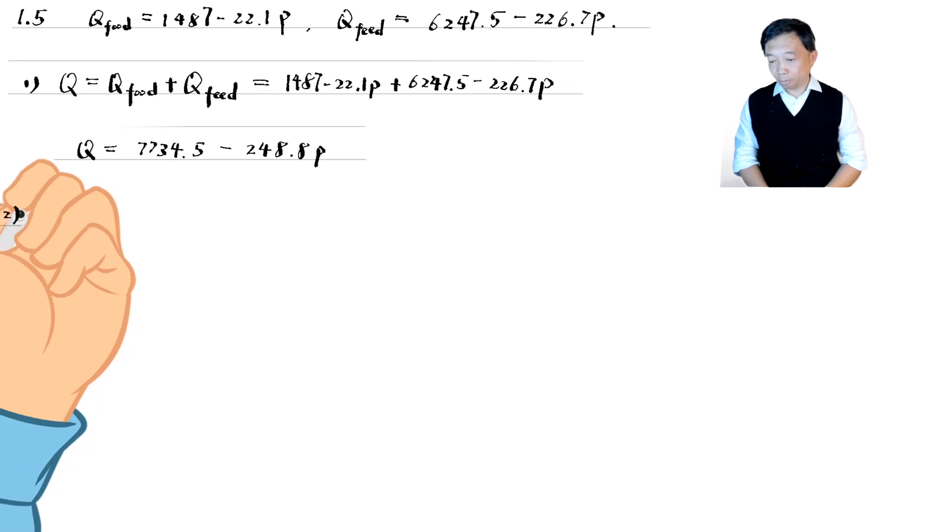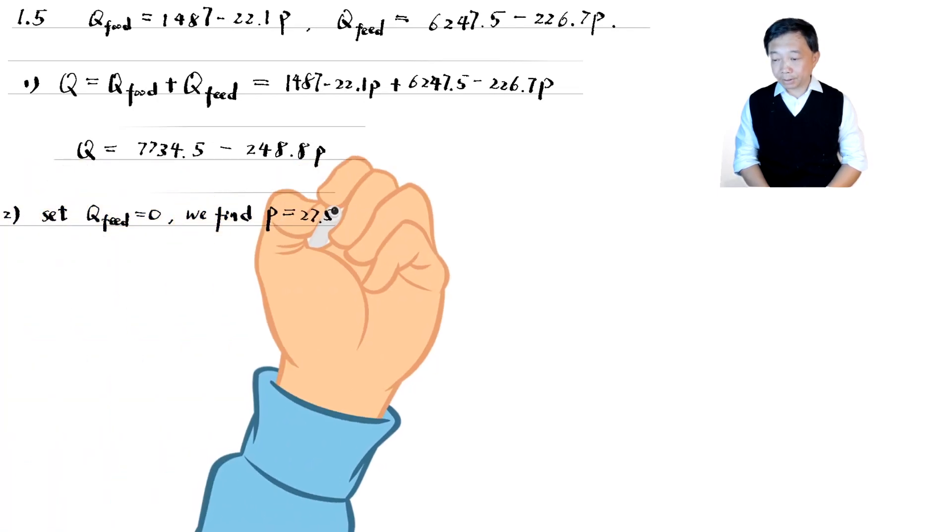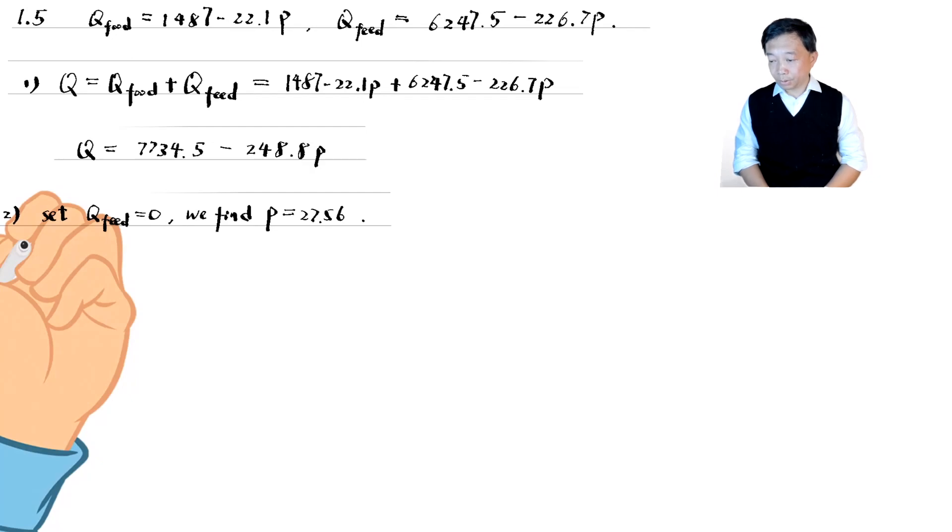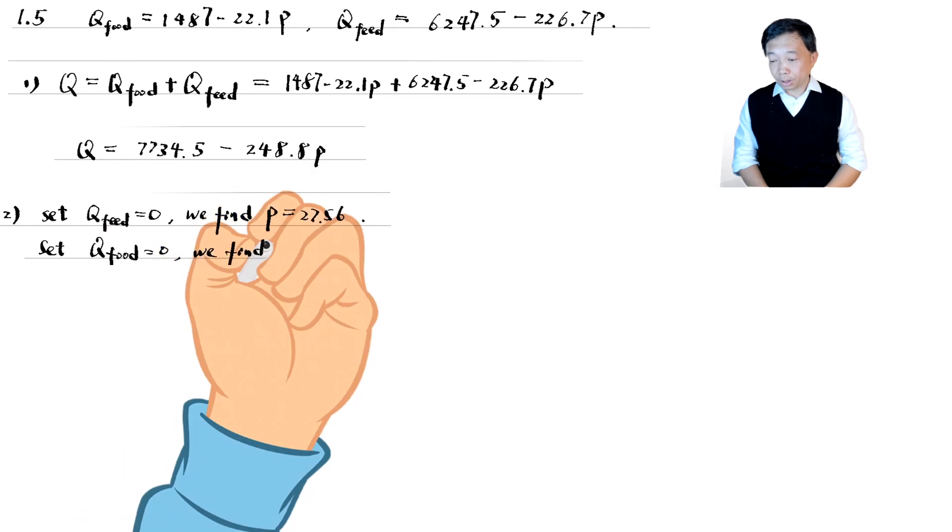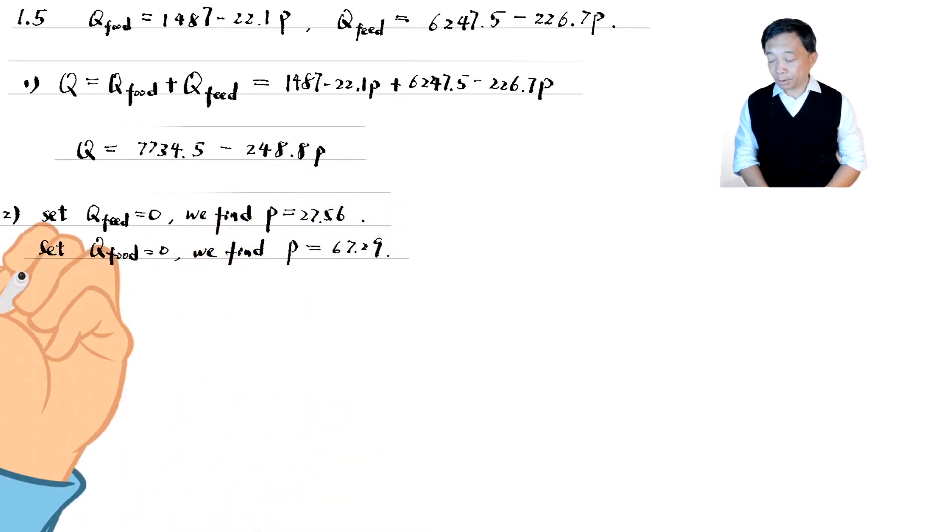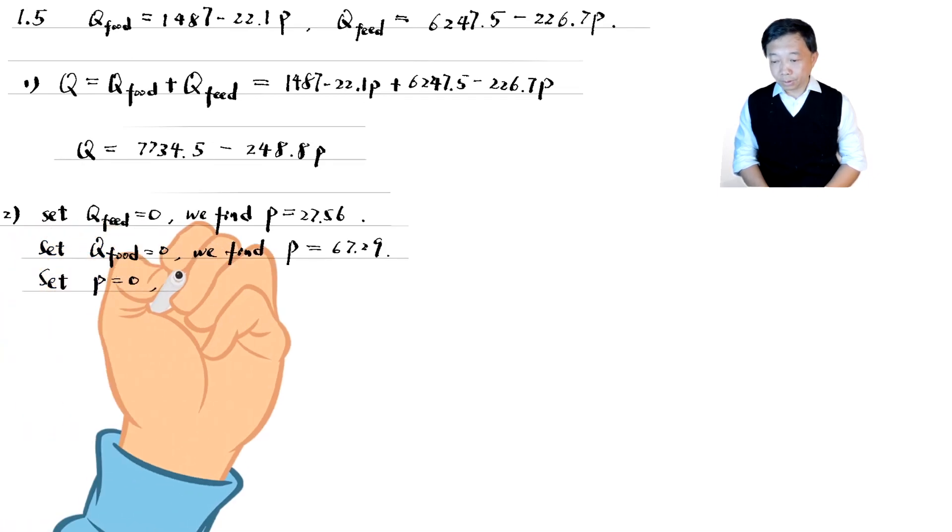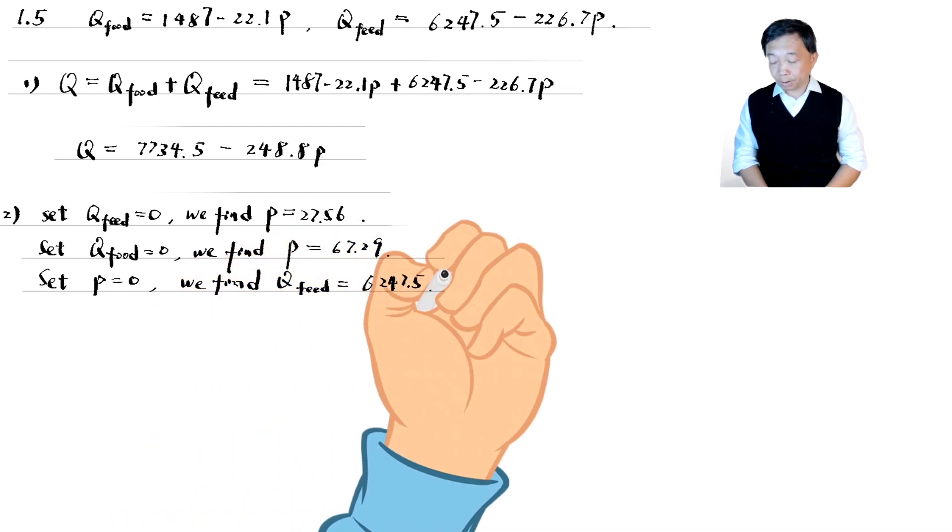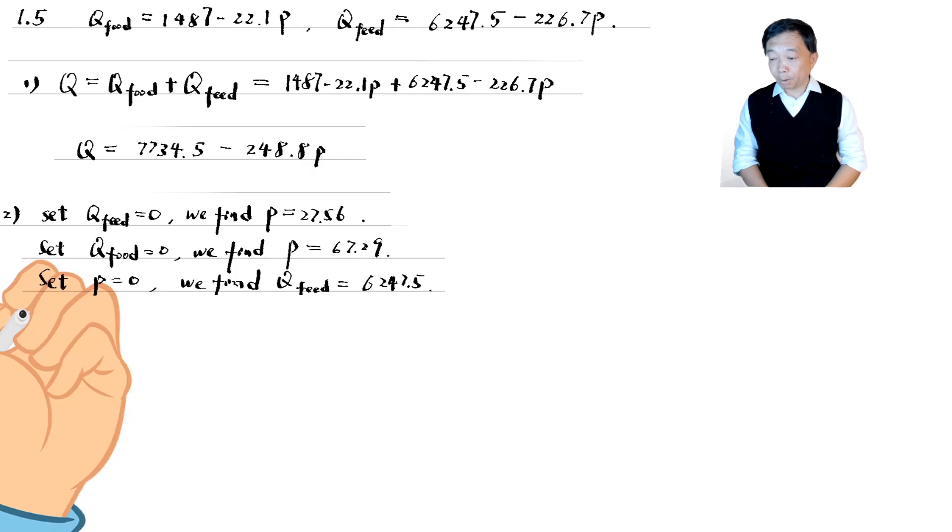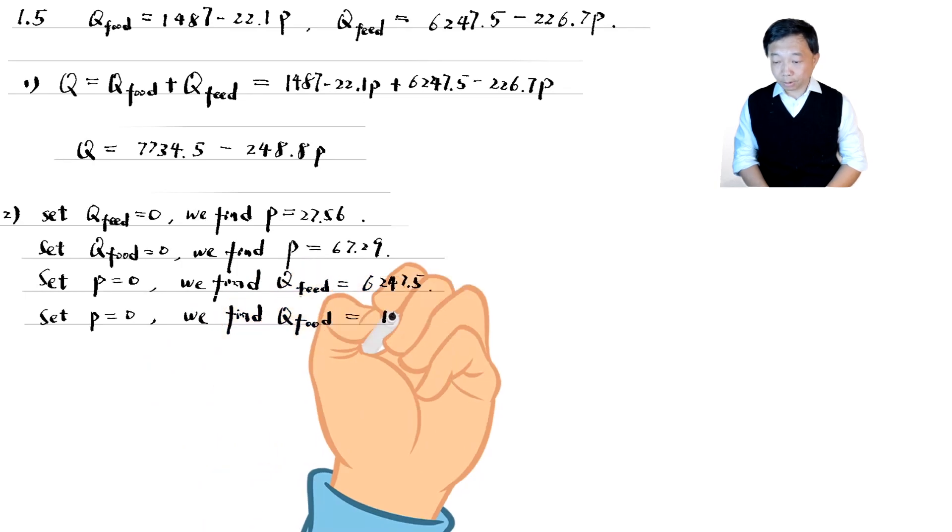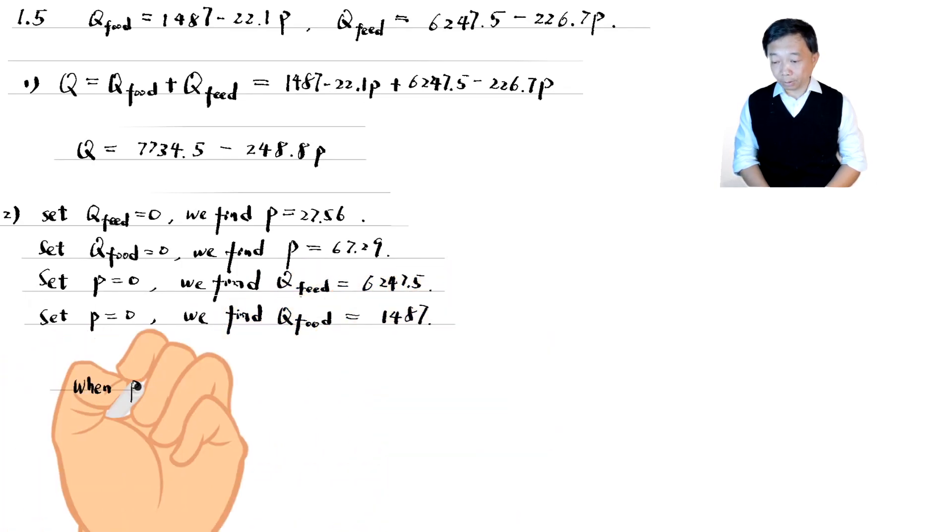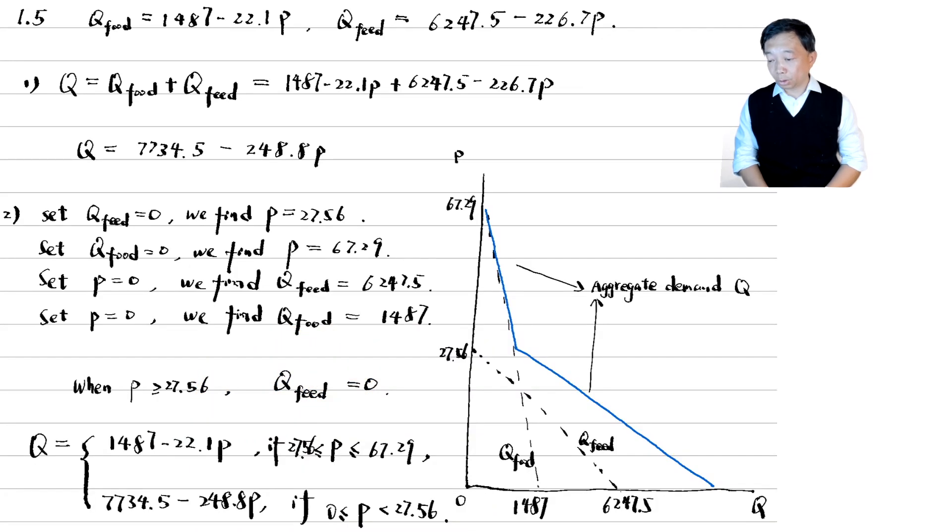If we set the feed quantity equal to 0, we find that the price is 27.56. If we set the food quantity equal to 0, we find that the price is 67.29. If we set the price equal to 0, the feed quantity demanded is 6247.5. If we set the price equal to 0, the food quantity demanded is 1487. We can now draw the two demand curves. The two demand curves intersect.